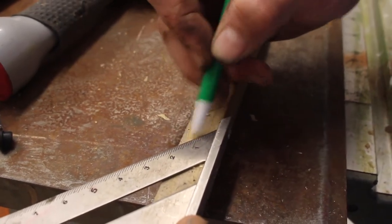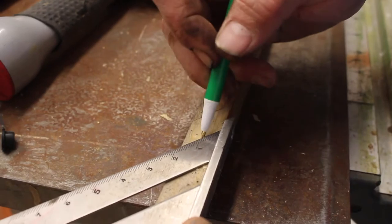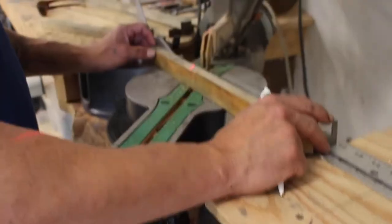For this method you're going to use one by material, actual thickness is 3/4 inch, with a table saw.